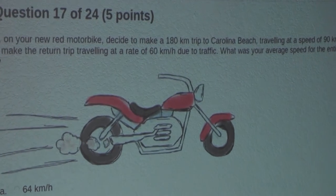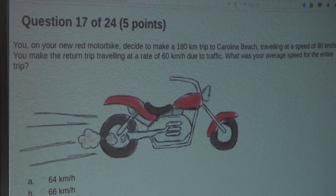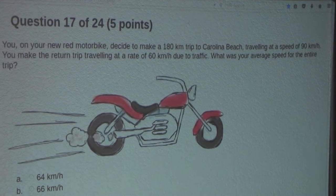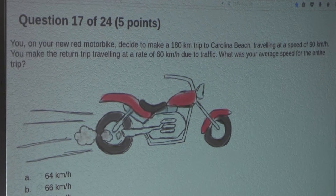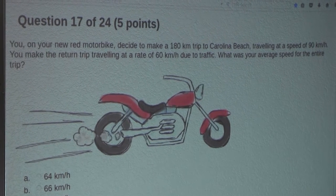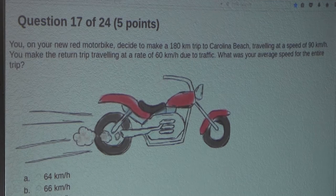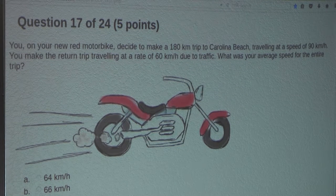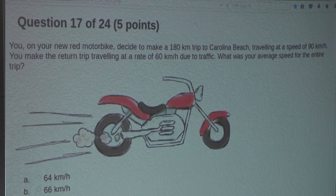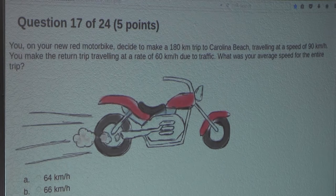You on your new red motorbike decide to make a 180 km trip to Carolina Beach traveling at a speed of 90 km per hour. You make the return trip traveling at a rate of 60 km per hour due to traffic. What was your average speed for the entire trip?